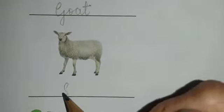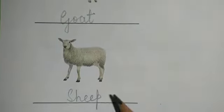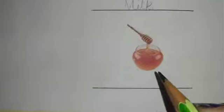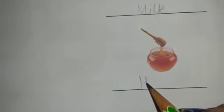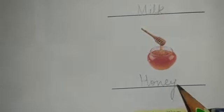Next, this is a sheep. Write down sheep. S-H-E-E-P, sheep. And this is honey. So, we'll write down H-O-N-E-Y, honey.